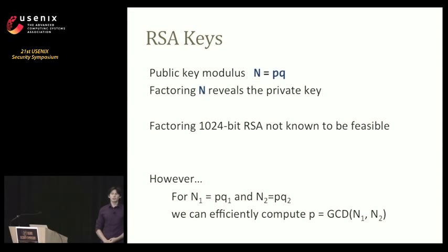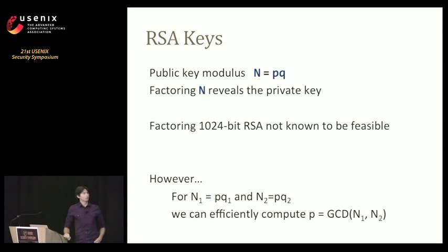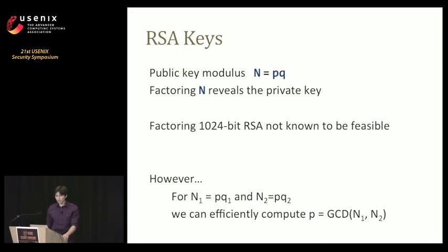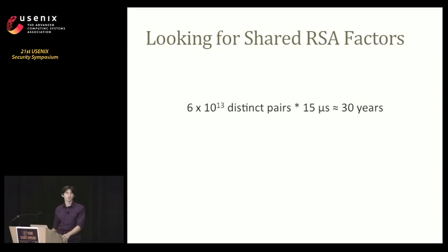In RSA, when we generate a public key, we first generate two very large primes P and Q. The public key is composed of a modulus N — the product of P and Q — and a public exponent E. There is no known method of factoring a 1024-bit certificate; the largest known factored certificate is 768-bit, achieved after a multi-year distributed computing effort. However, if one prime is shared between two keys, we can efficiently compute the GCD of their moduli in approximately 15 microseconds on a desktop. The problem is that pairwise comparison of all keys in our dataset would take approximately 30 years.